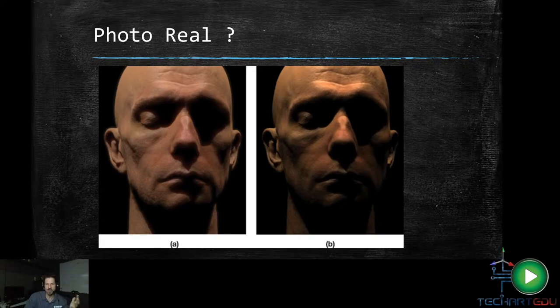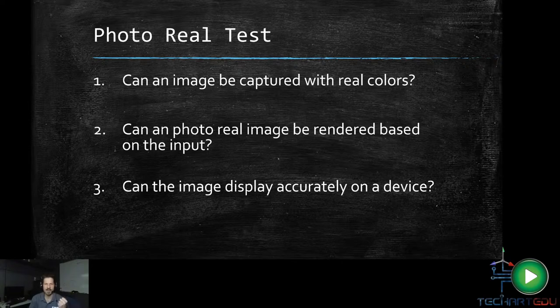And so you might start asking yourselves, what is photoreal? Now I'm kind of curious, is A the photoreal one or is B the render? Or is B the photoreal and A is the render? Now I'm not going to tell you right now. If I want to see who all is interested in this, leave a comment on this YouTube posting and tell me what you think is, which one of these ones is photoreal and which one is rendered? But the idea is that we're getting to a point that it's getting really hard to tell. And that's a good thing. So there's a test to see, can we actually have photorealism? And in order to have photorealism, we've got to pass these three tests. And the first question is, and that test is, can an image be captured with real colors? The second question is, can the photoreal image be rendered based on the output? And the third is, can the image display accurately on a device?